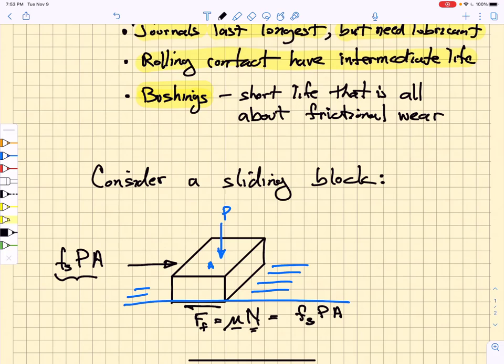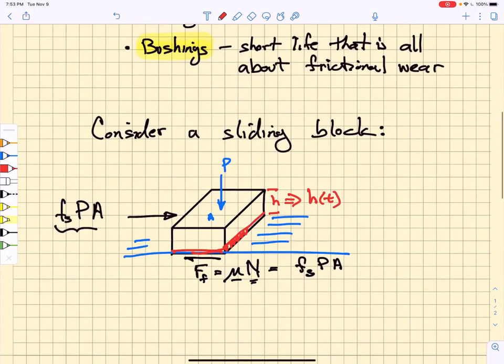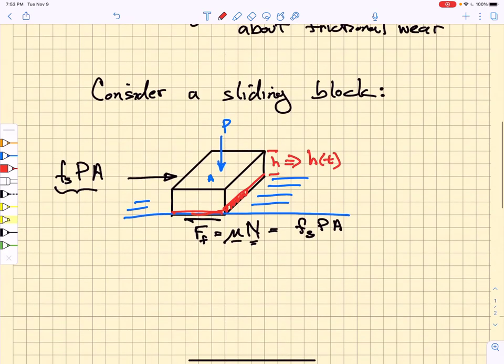So what happens is that as you continue to slide this block, you would wear part of the block away. You would slowly wear material away, and the height of that block would become a function of time.